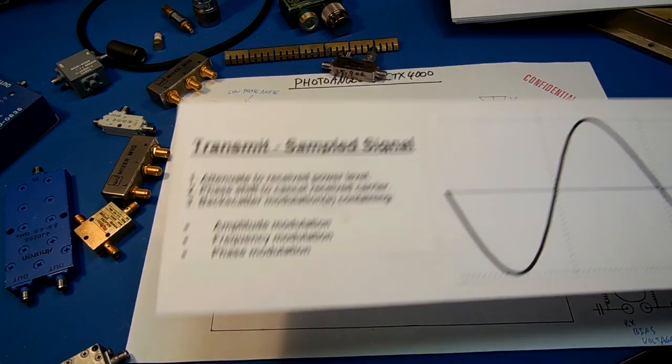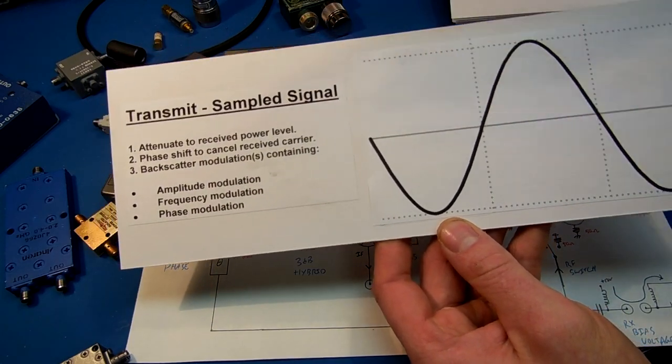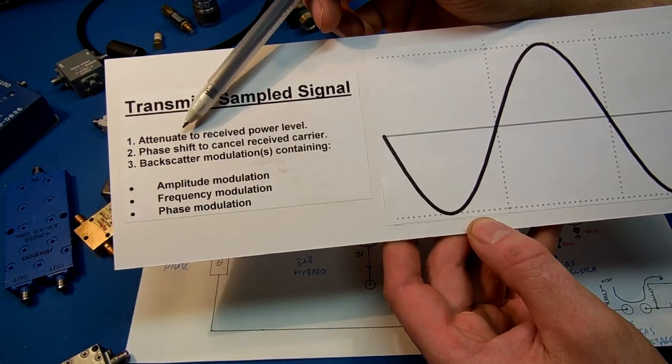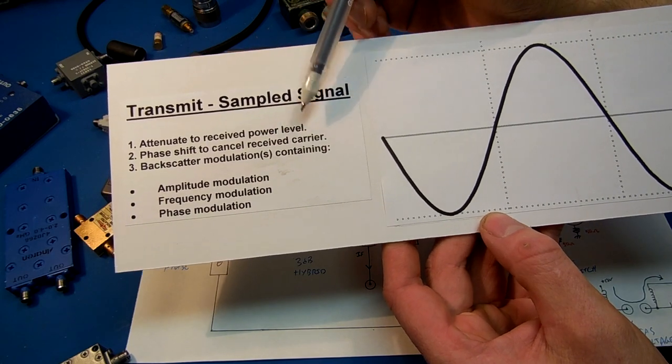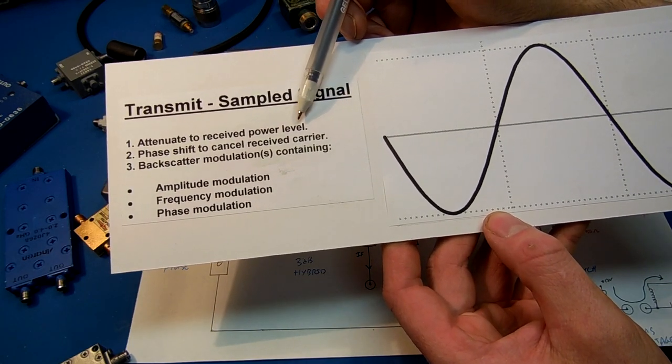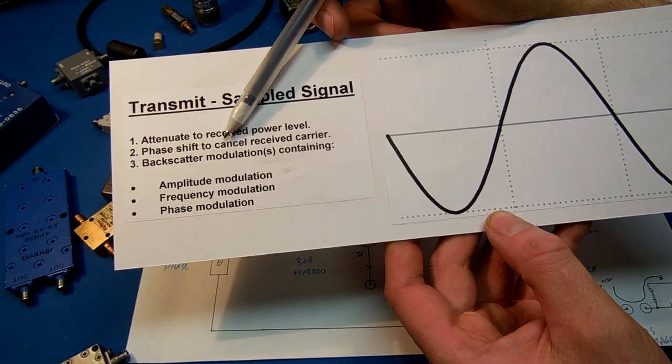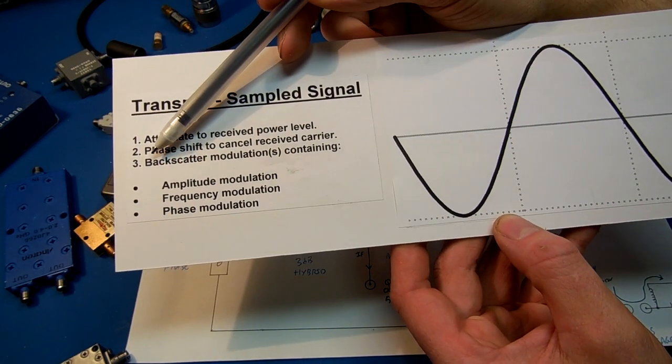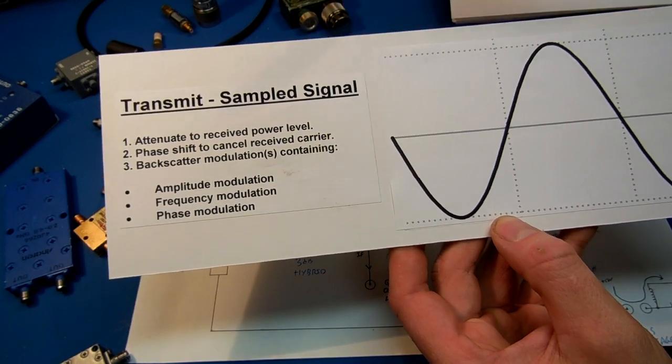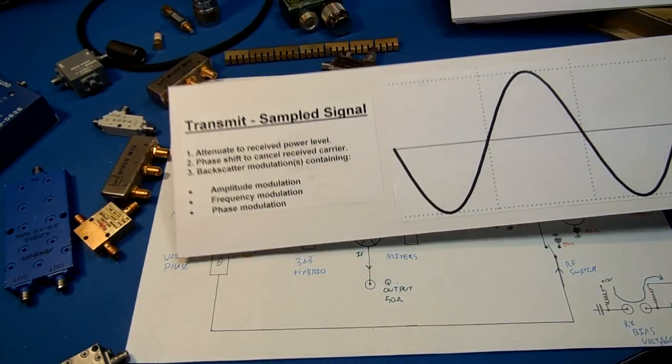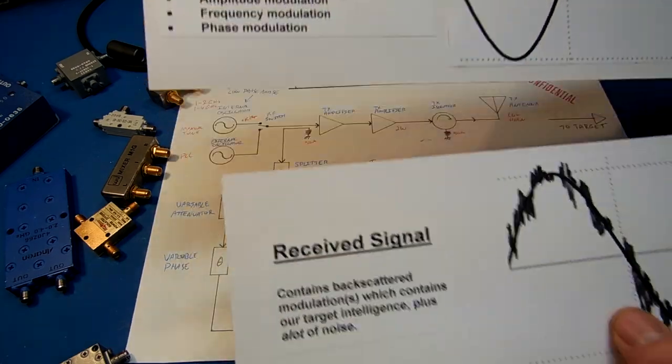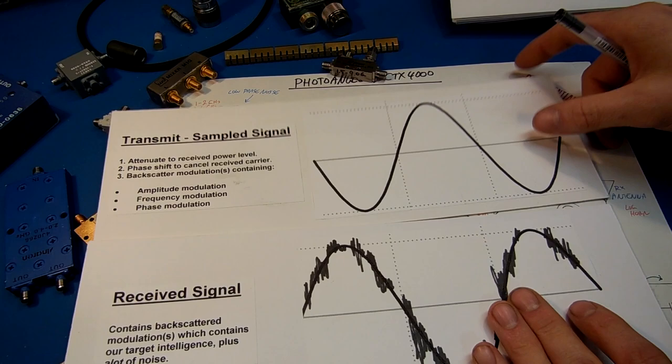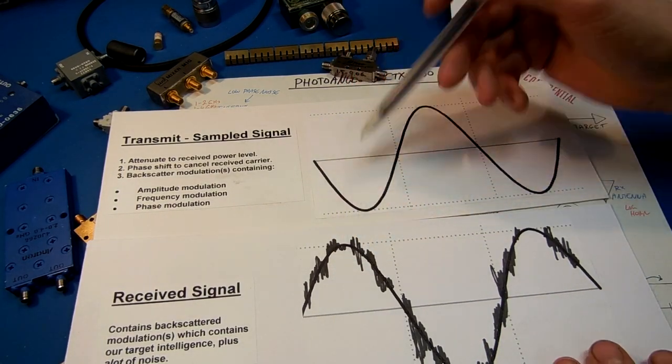Here's a little chart I made. This is a sample of the transmitted signal. We're gonna attenuate it down to the received power level, which might be negative 80 dBm or so. We're gonna phase shift this to cancel the received carrier coming back in. And we are left with the backscatter modulations containing amplitude, frequency, and phase modulation. This is our received signal containing our intelligence.